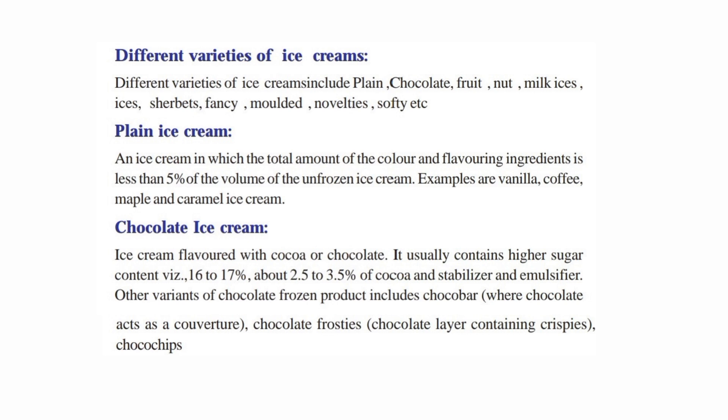Maple and caramel ice cream. Chocolate ice cream is used as a flavor — ice cream is flavored with chocolate like cocoa, chocolate bar, chocolate frosties, choco chips. Chocolate ice cream contains high sugar content; you can add 16 to 70% of the sugar content, 2.5 to 3.5% of cocoa, and stabilizer and emulsifier.